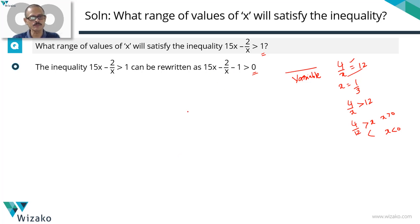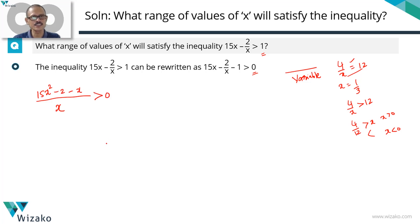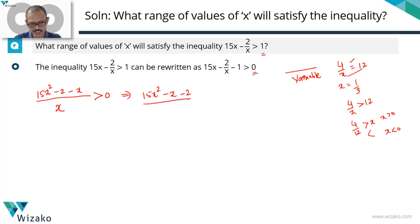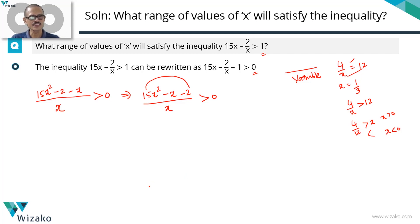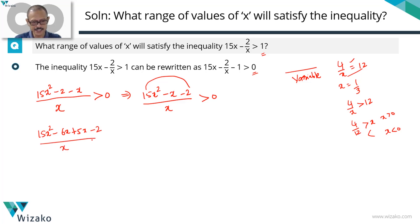Let's start by rewriting this expression, taking x as a common denominator. If x is the common denominator for this entire expression, the first term becomes 15x squared minus 2 minus x — this entire thing is greater than 0. Rewriting it to resemble ax squared plus bx plus c, the numerator becomes 15x squared minus x minus 2 divided by x is greater than 0. The product of the first and last term is minus 30. The middle term coefficient is minus 1. We split the middle term such that the sum of the two parts is minus 1 and the product is minus 30. So minus 1 gets split as minus 6 and plus 5, giving us 15x squared minus 6x plus 5x minus 2 divided by x is greater than 0.